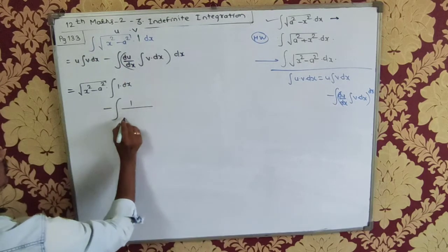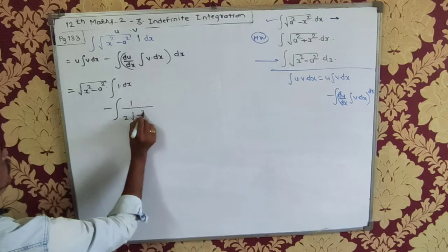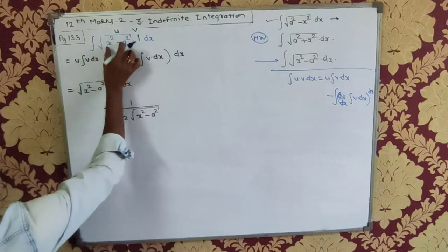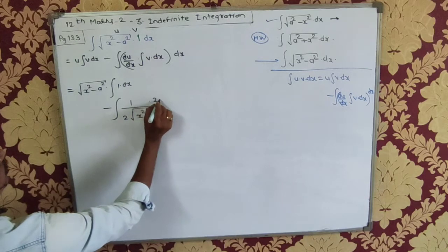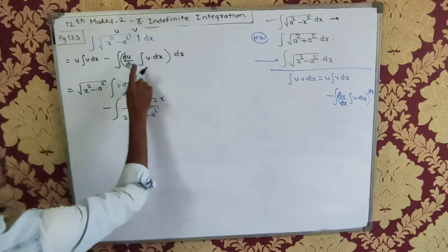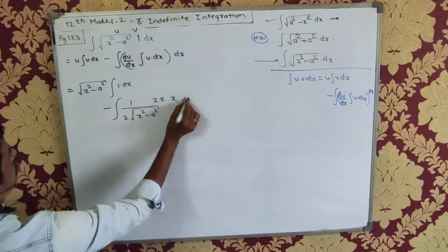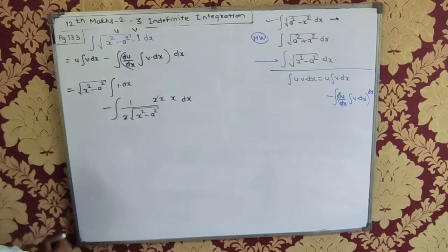This is the derivative: 1/(2√(x² - a²)) times this derivative, that is 2x. One kind of integration: ∫x dx. As we said, 2 gets cancelled.